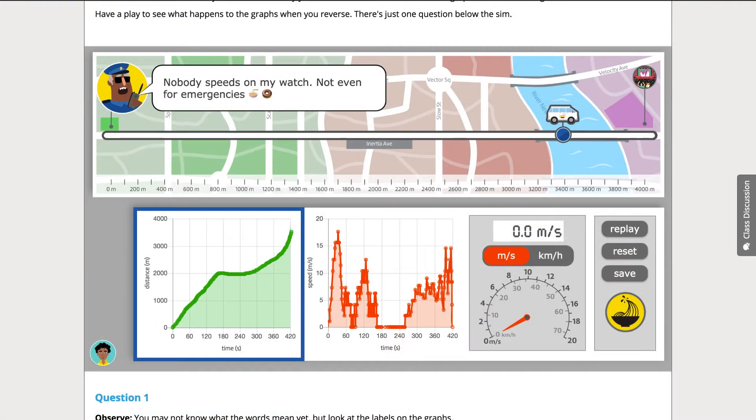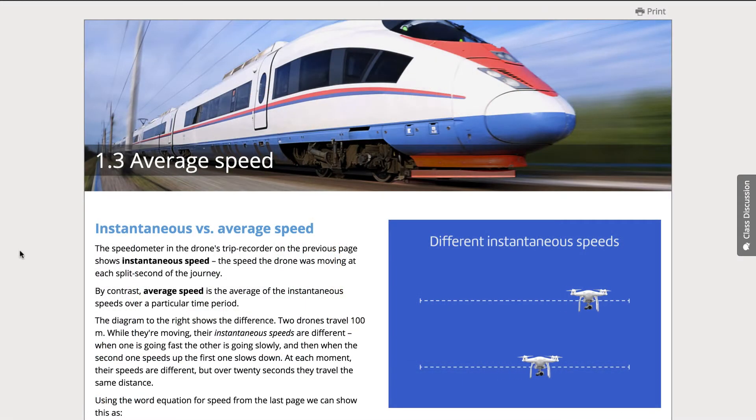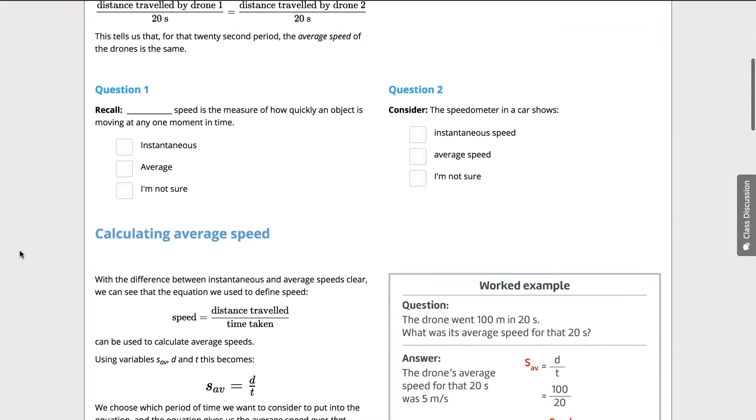Later, in the vectors section, we present the same sim but allow backwards movement. With students engaged by the sim, we go into the main body of the unit.